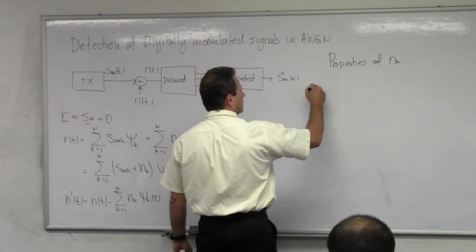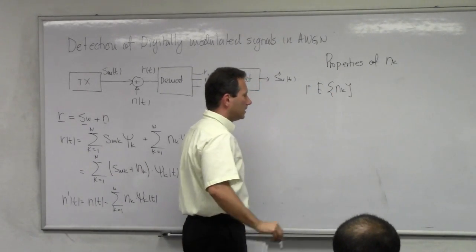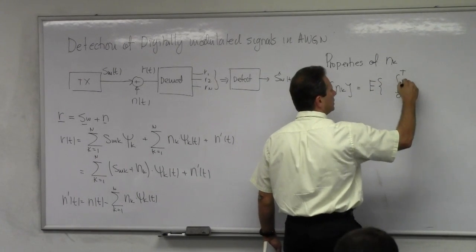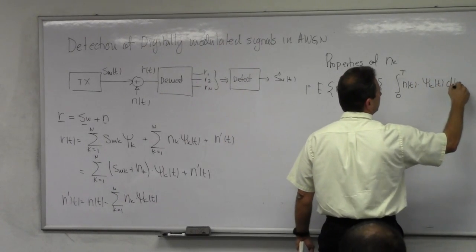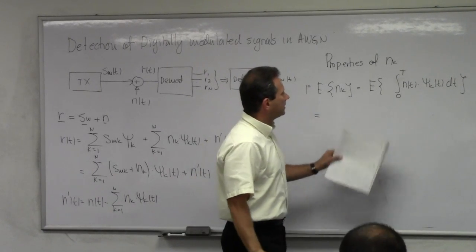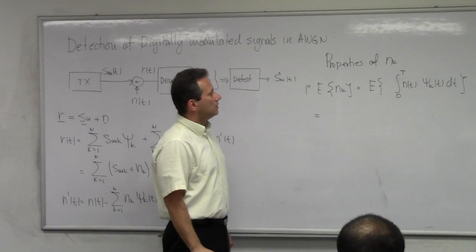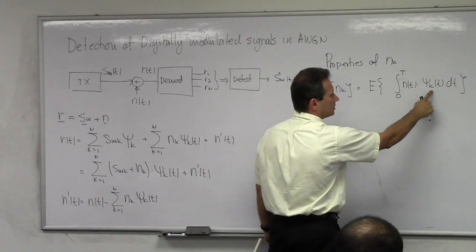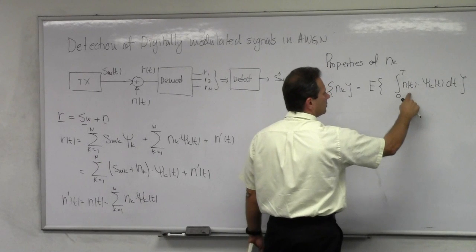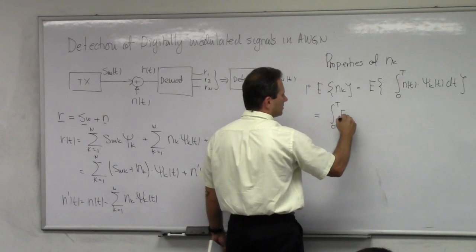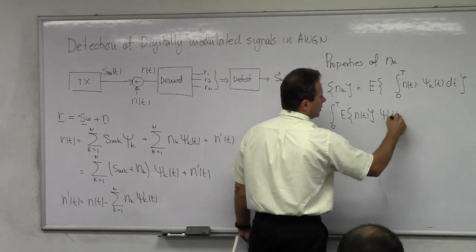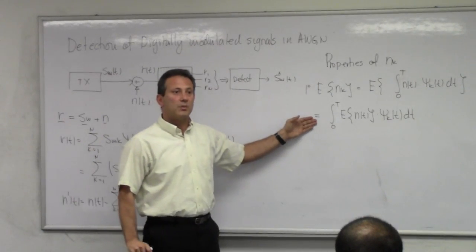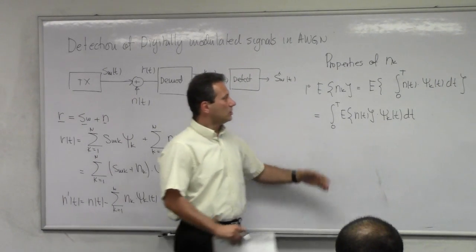The first thing I'm going to determine is the expected value — the average value of Nₖ. Nₖ is calculated as the integral from 0 to T of N(t)·ψₖ(t) dt. The integral and expectation are both linear operators, so I can exchange their order and operate the expected value on the integrand. ψₖ(t) is a deterministic function, so the expectation operates only on N(t). The expected value of N(t) for AWGN noise is zero, so the whole thing is zero.